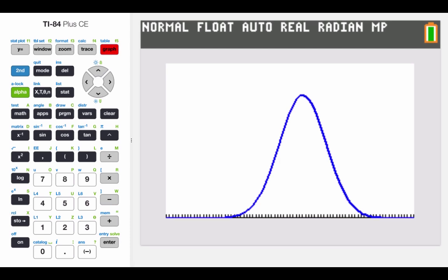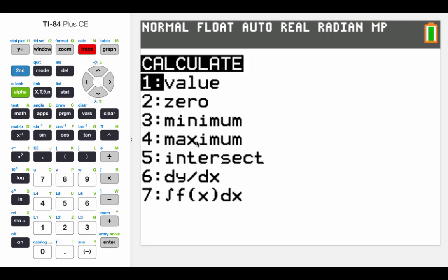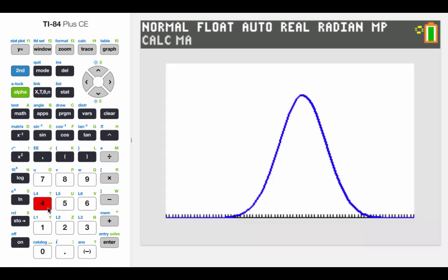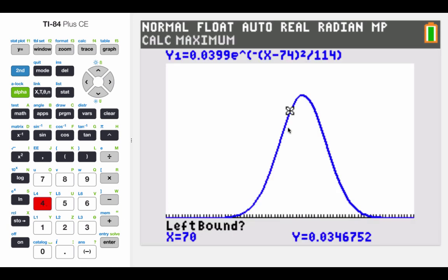We said we were looking for the highest y value on this curve. So what I'm going to do is hit second trace, and it lets me pick a maximum operation. We want to be to the left of that highest point. So I hit enter. Then we want to arrow over to the right past that highest point. And again, I'll hit enter. Let's just take a guess, but we don't have to. We can just hit enter one more time. And it tells me that the average is at about 74 for that x value.